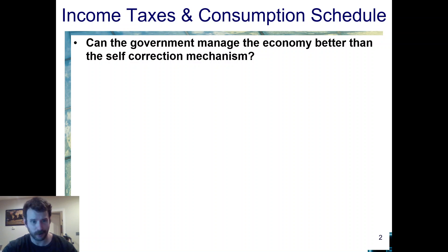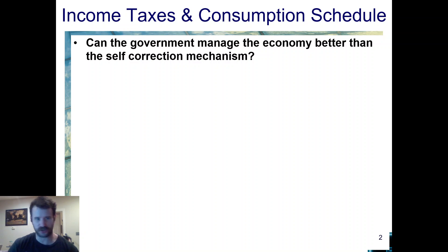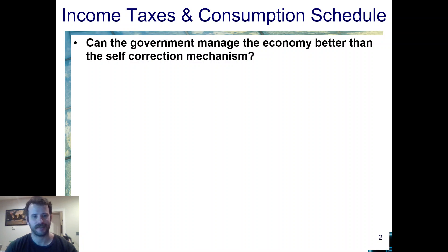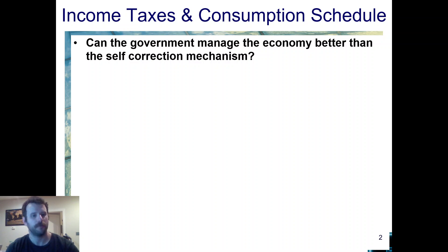Some of it's just about, hey, you're behind on rent because of a crazy business cycle event that happened — like a pandemic, for instance. Regardless of whether this shifts out the aggregate expenditure curve, the government could just make things nicer for people. That is a role the government can provide, whether or not you think it's what the government should do or whether it's efficient — that's a different story, but it's another function of fiscal policy.